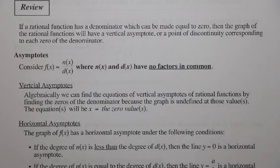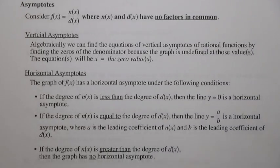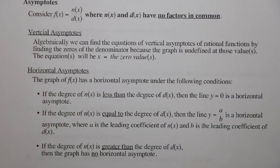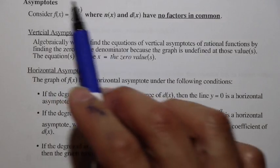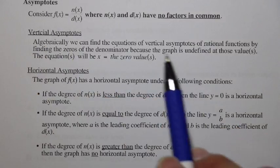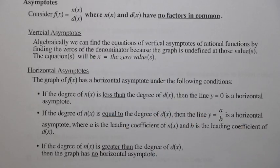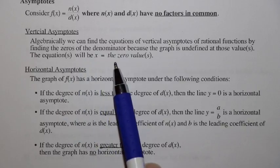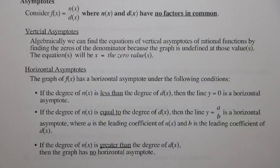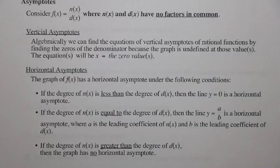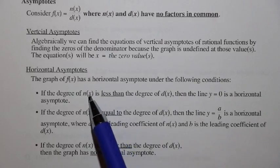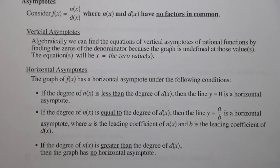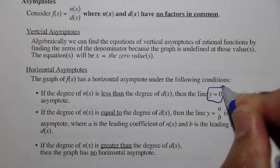That's assuming the factor can't be cancelled out. It could also have a point of discontinuity if it can be cancelled. For asymptotes with no factors in common in n(x) over d(x), we find vertical asymptotes using the zero values of the denominator — that is, x equals those zero values.